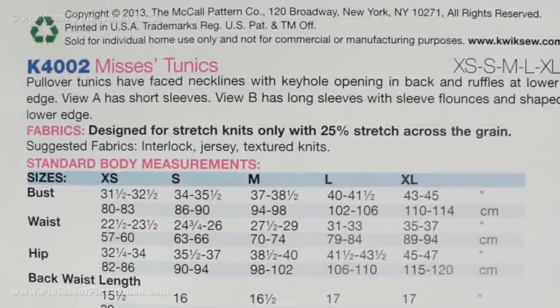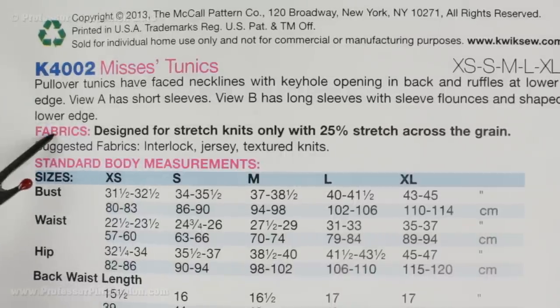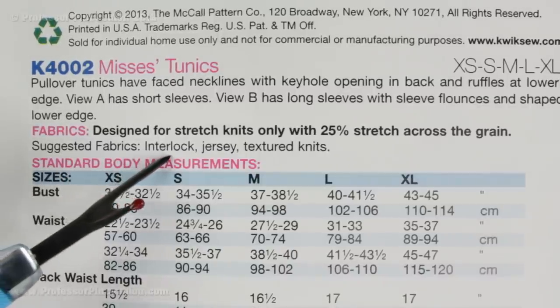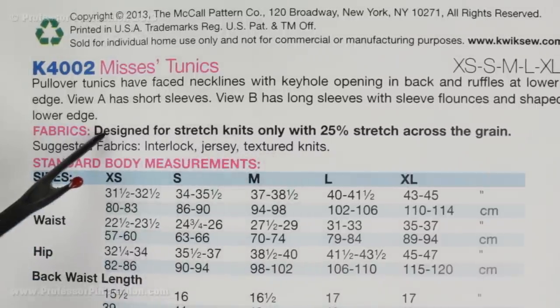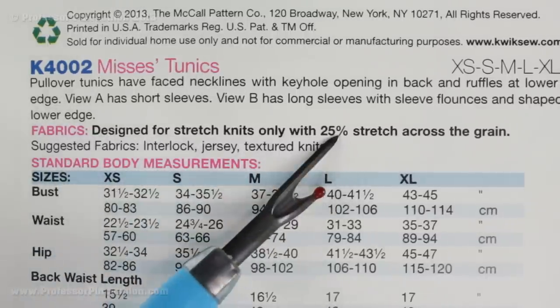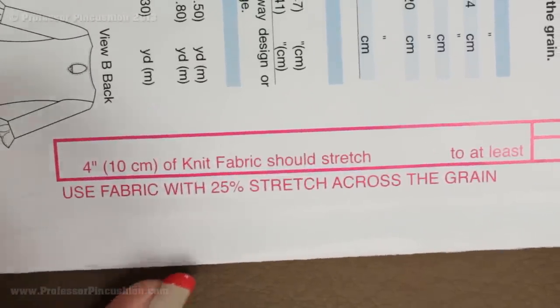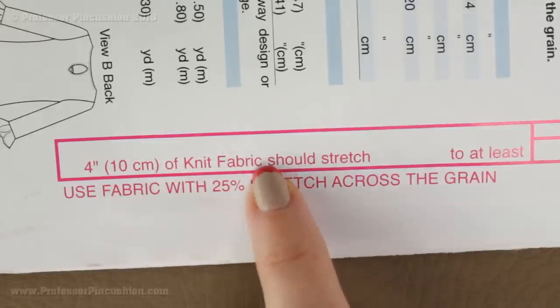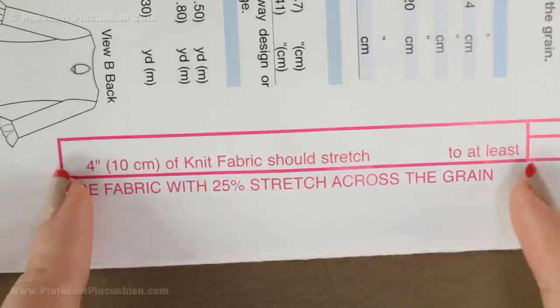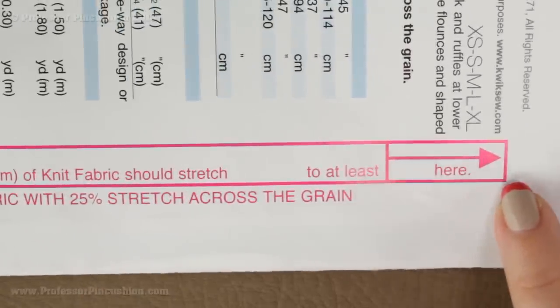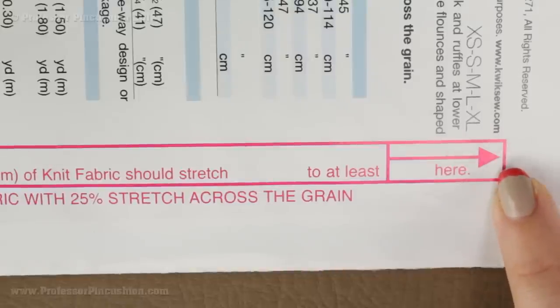Here's another example with my Quiksew pattern. In this case it says 'fabrics' instead of 'suggested fabrics,' but it means the same thing. They're suggesting interlock jersey and textured knits, and this particular garment is designed to work with fabric that has 25% stretch across the grain. If you're unsure if your fabric will work, they have a handy stretch gauge tool on the back of the envelope — take a 4-inch piece of knit fabric, hold one end, and stretch it to the indicated point. If you can do that, the fabric is acceptable for this pattern.